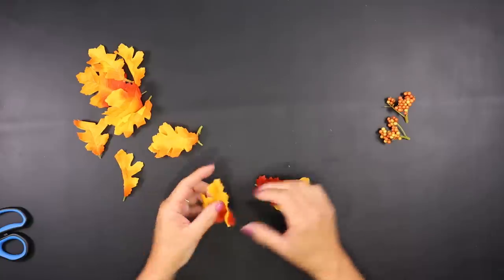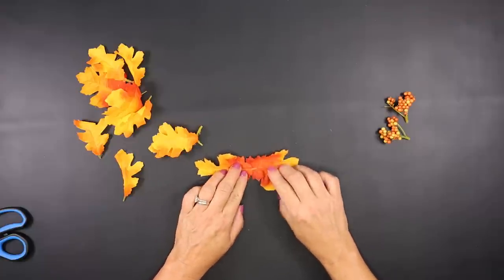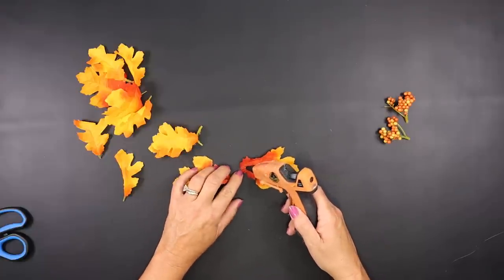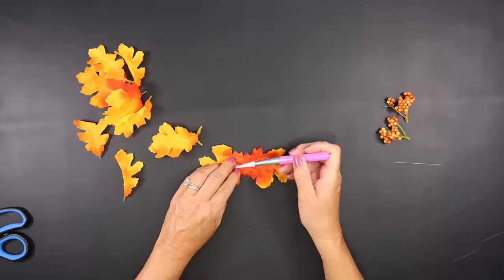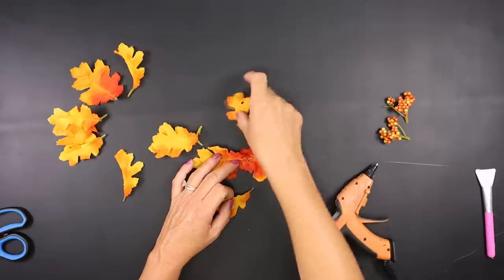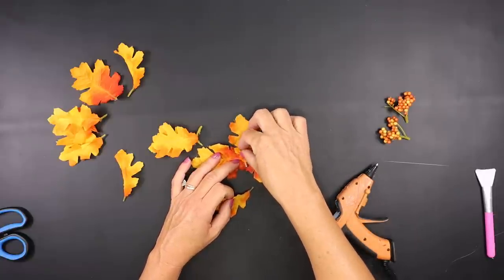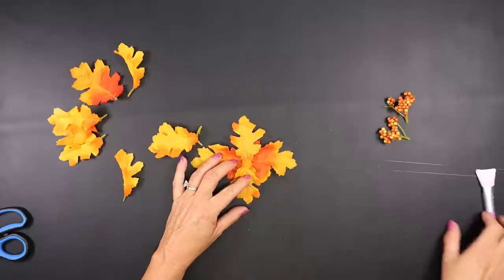Then we're going to take two of the largest ones. We're going to hot glue them, overlapping each other at the ends. You'll want to try to push that as flat as possible in the center, and then you're going to take your other smaller leaves and start gluing them on the opposite sides, overlapping each other. Continue to do this until you form a circle.